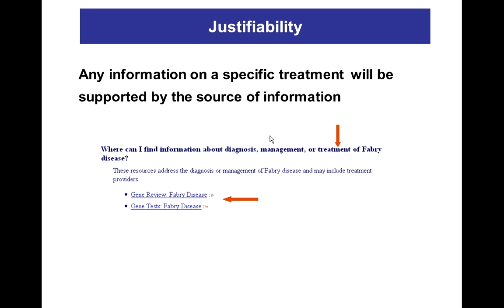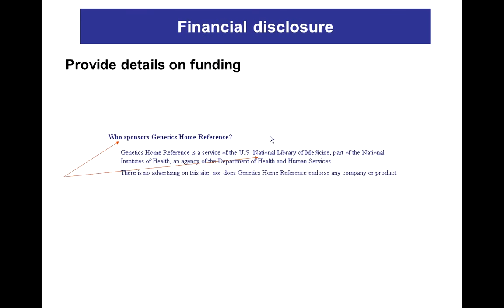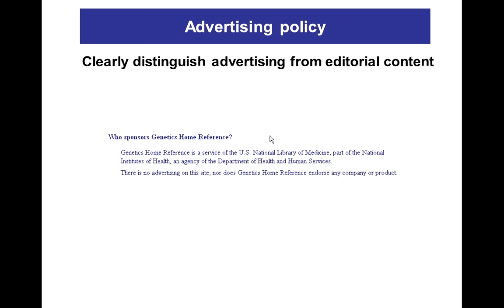Justifiability: any information on a specific treatment will be supported by the source of information. Transparency: possibility to contact the webmaster for more complete information. Financial disclosure: provide details on funding. Advertising policy: clearly distinguish advertising from editorial content.